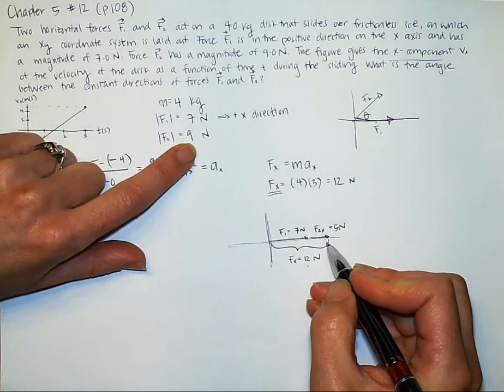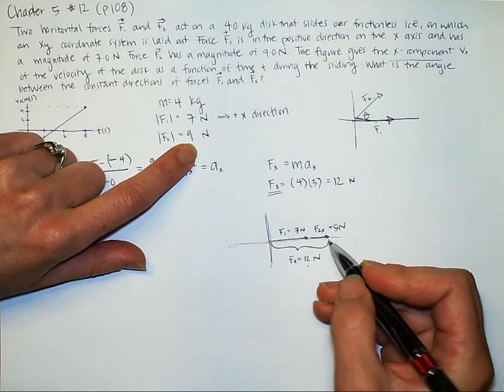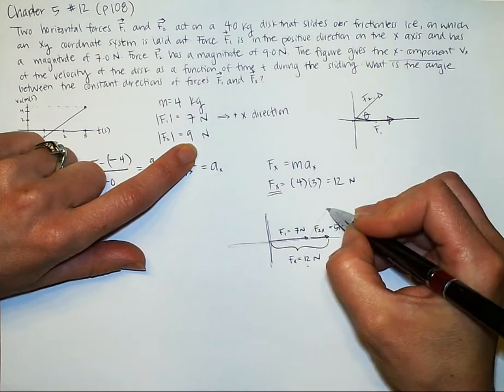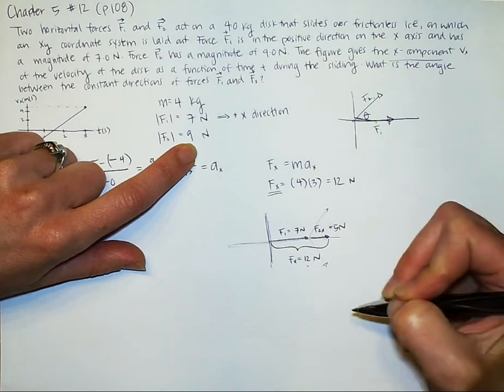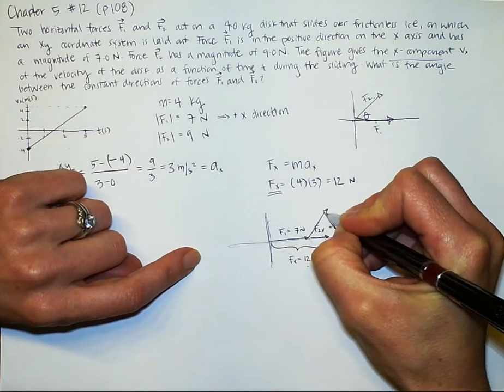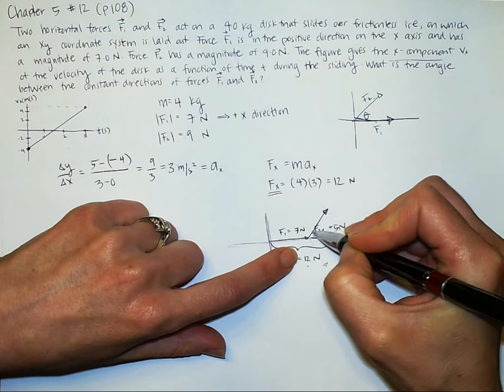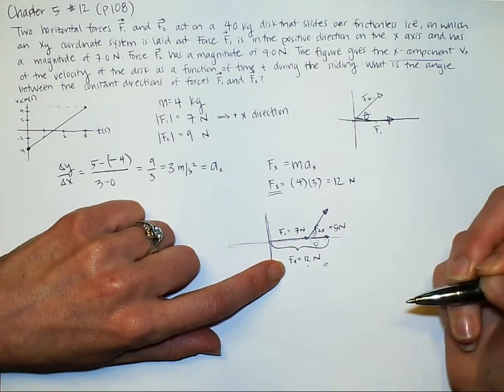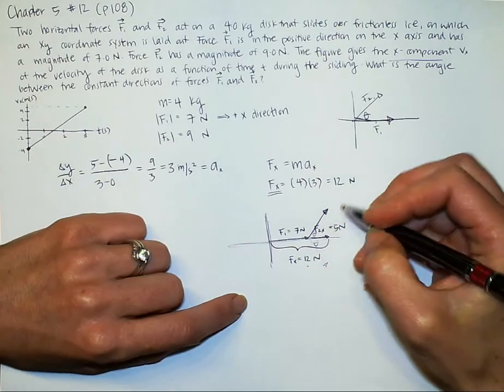But we know that's not the whole force. We know that the entire force is 9 newtons. So that must be going up at an angle like this or down at an angle like this. I'll draw it right here because this angle here and this angle down here are going to be the same, just one is positive and one is negative. So either could be a good answer.